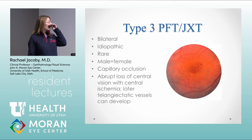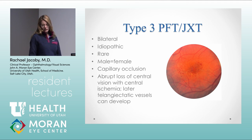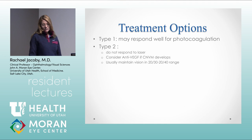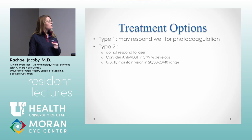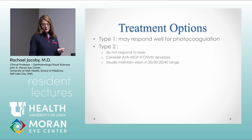Type 3 macular telangiectasia is the rare bilateral form with capillary occlusions. Patients can have abrupt loss of vision and then telangiectatic vessels develop later — it's just really uncommon. For treatment: Type 1 is typically treated with laser and anti-VEGF agents. Type 2 has no known effective treatment — it doesn't respond well to laser. The only current treatment for Type 2 is if they develop a choroidal neovascular membrane, at which point anti-VEGF therapy would be started.